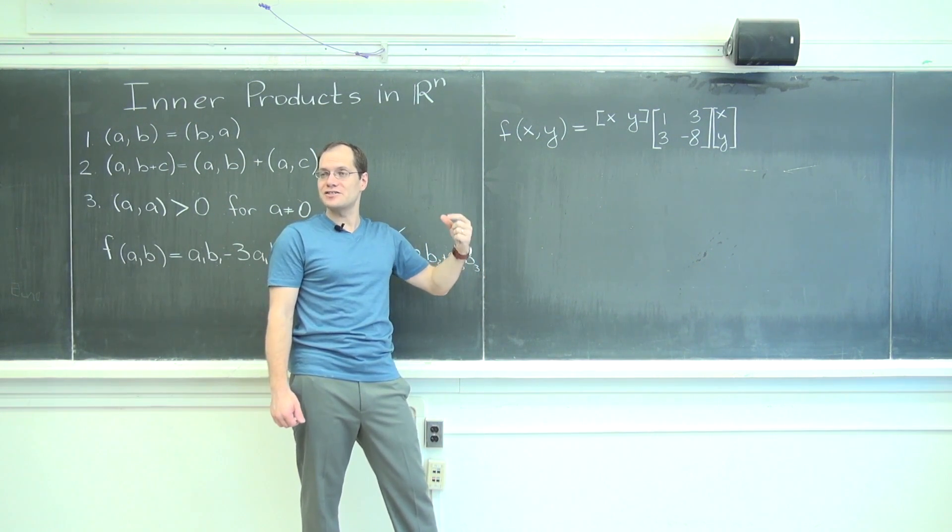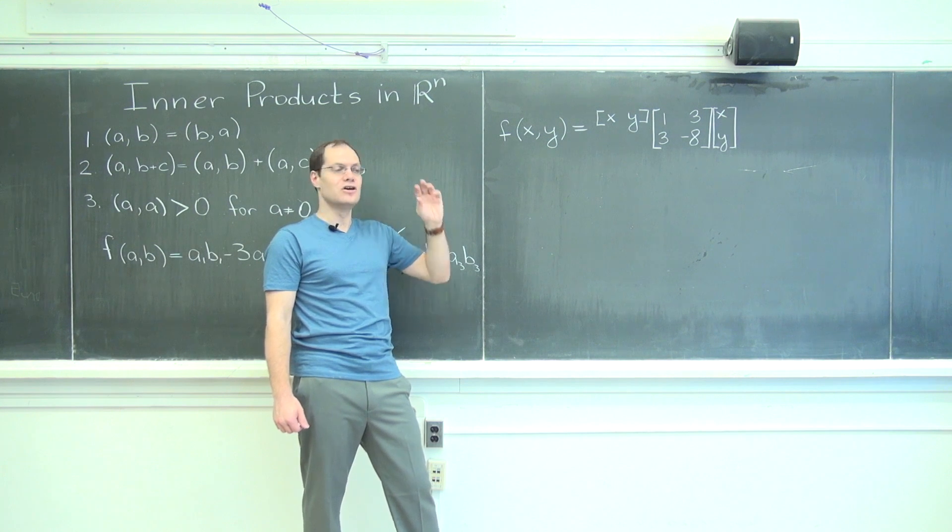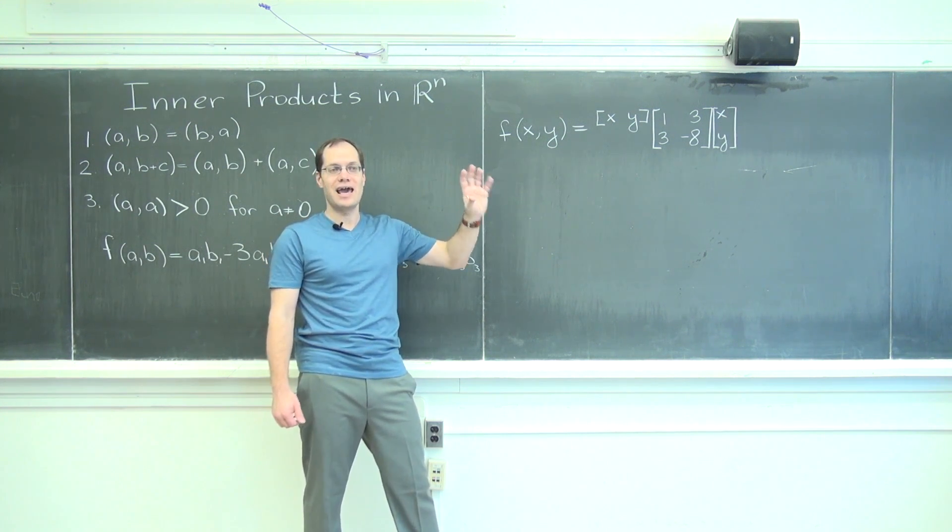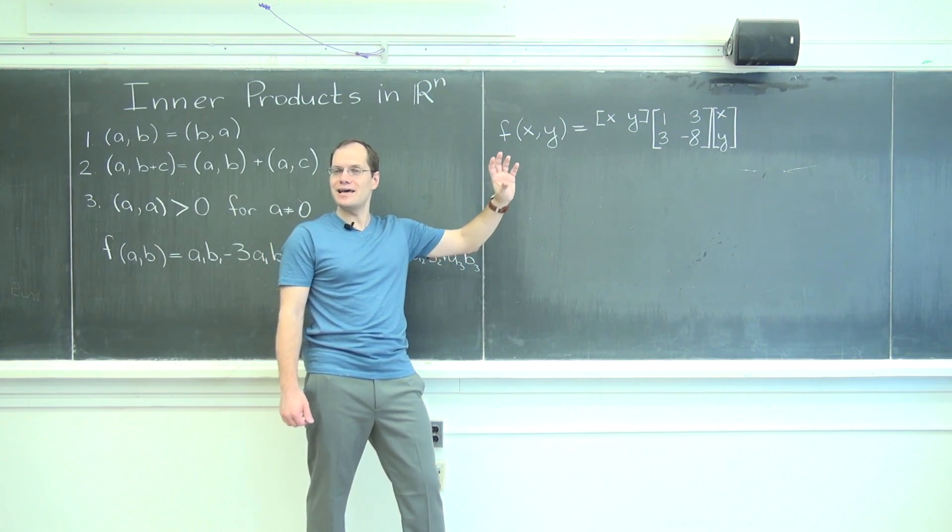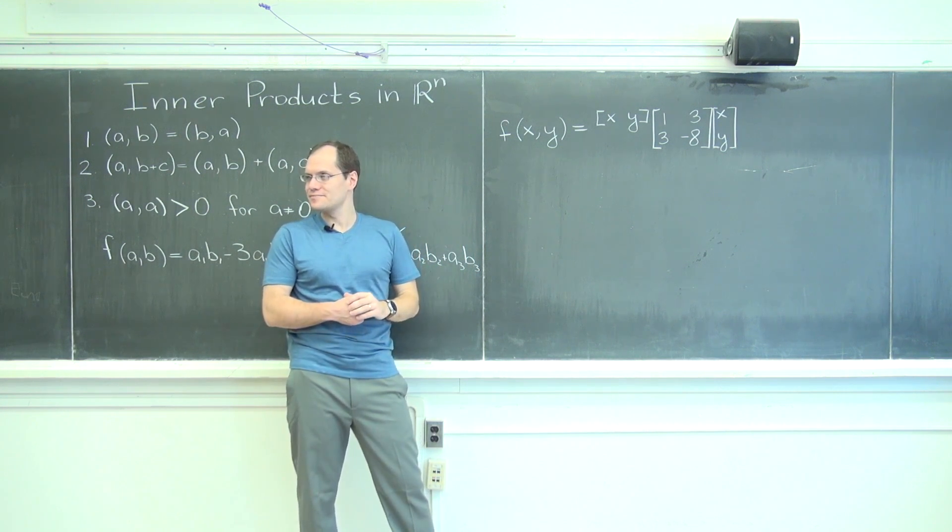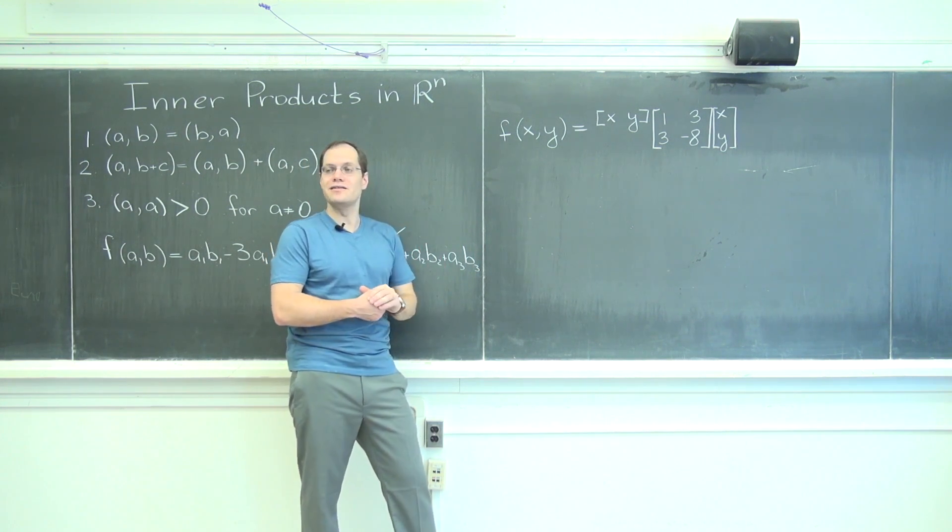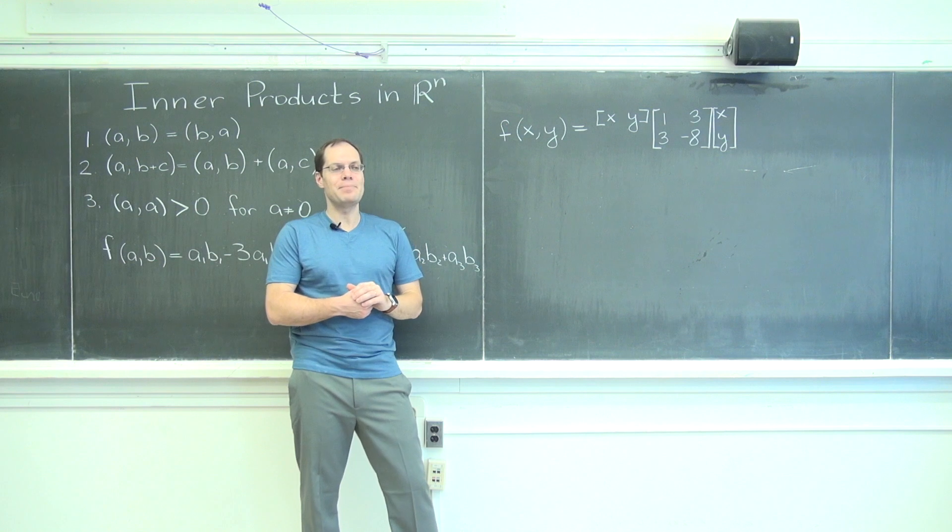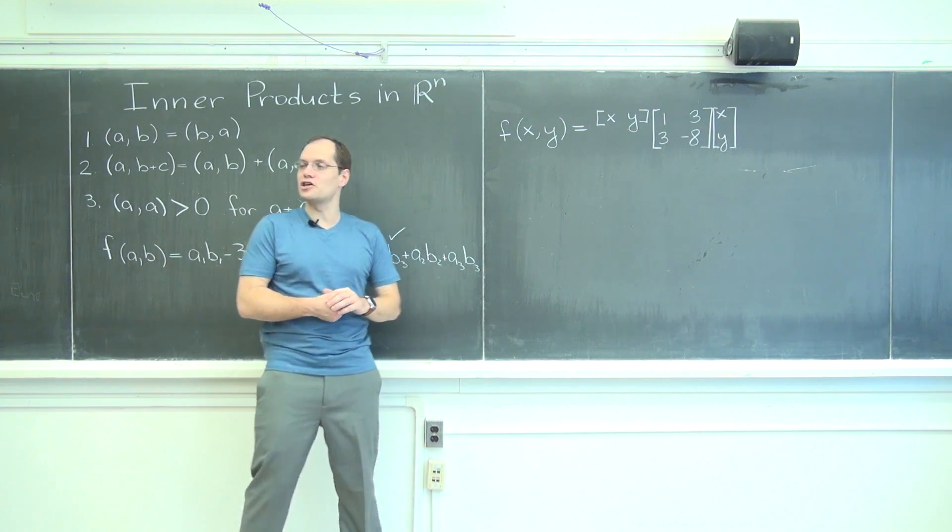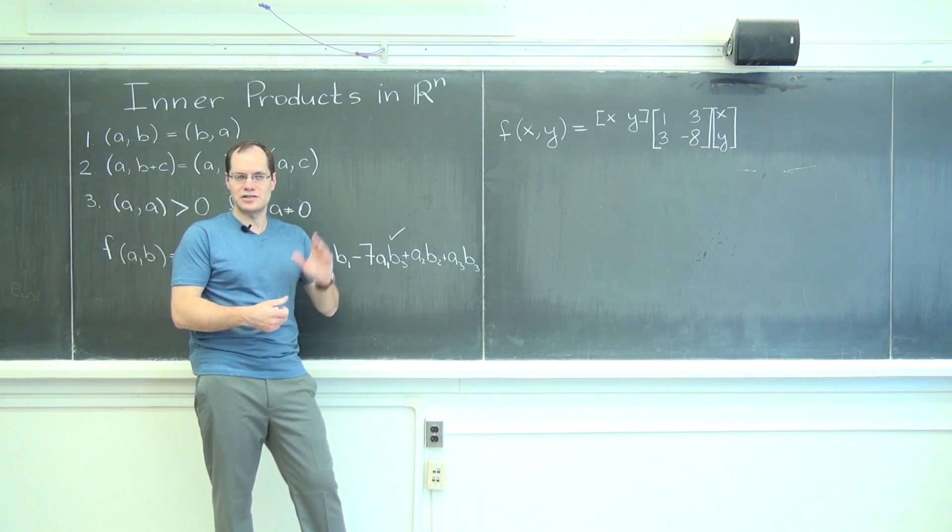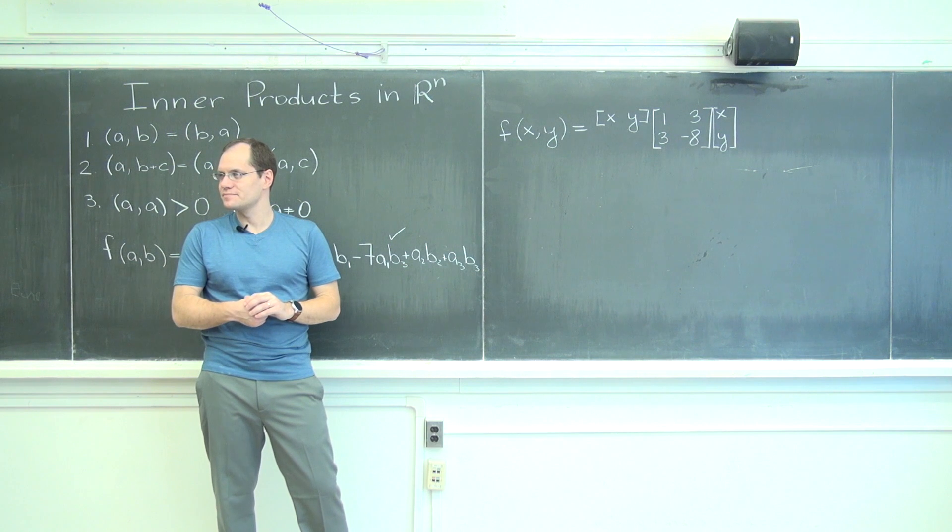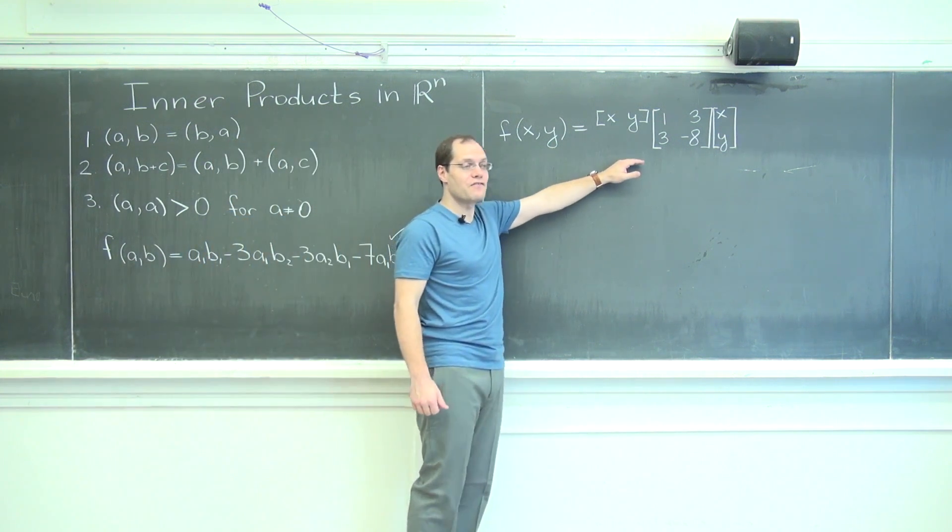And when you're down to one vector a, in other words you're considering lowercase a transpose a, capital A, lowercase a, then it's no longer called a bilinear form. It is now called a quadratic form, because there's only one input. So this is a quadratic form.